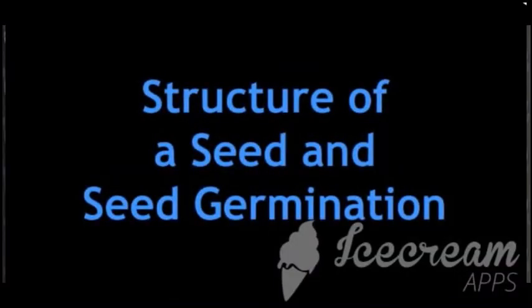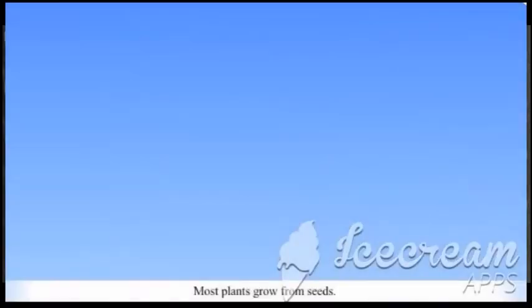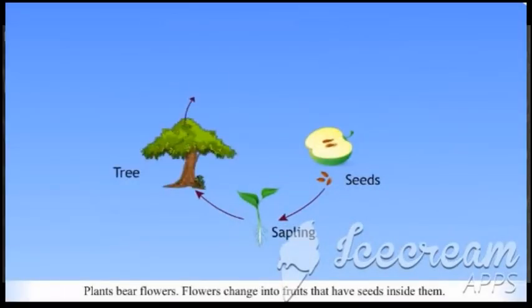Structure of a seed and seed germination. Most plants grow from seeds. Plants bear flowers. Flowers change into fruits that have seeds inside them.